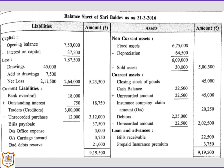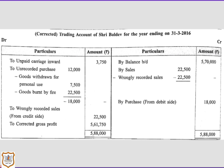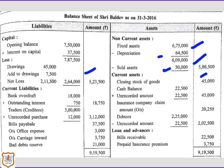In adjustment six, unrecorded credit purchases of Rs. 12,000 will be shown on the debit side of the corrected trading account. From purchases, we deduct Rs. 7,500 for goods withdrawn for personal use. Since these are unrecorded credit purchases, Rs. 12,000 will be added to creditors, making the total creditors Rs. 3,12,000.